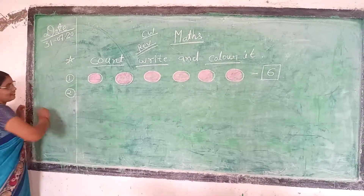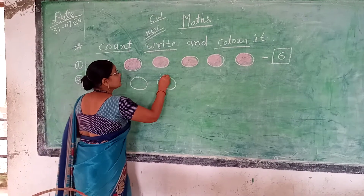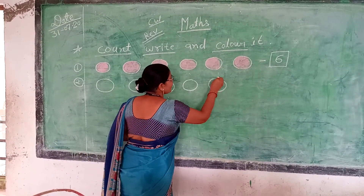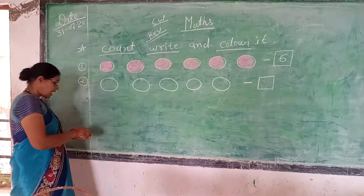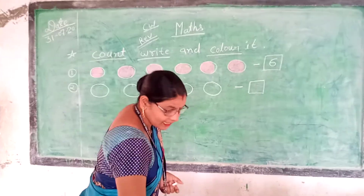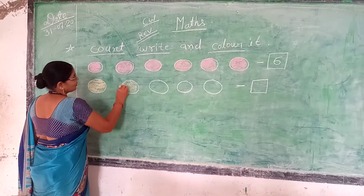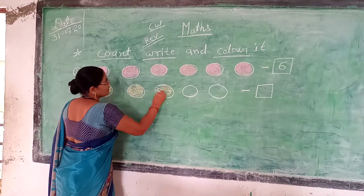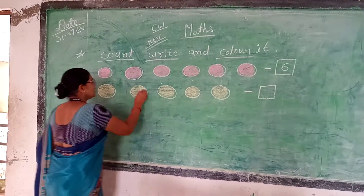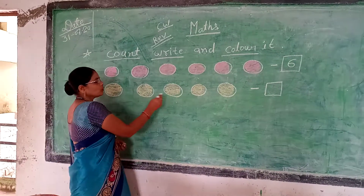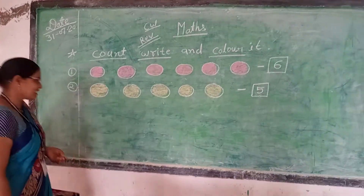How many circles do you think? One, two, three, four, five. How many circles? Five circles. Yes. Now we will color. Which color? Yellow color. Can you show them? Yes. This is a yellow color. One, two, three, four, five — five circles.